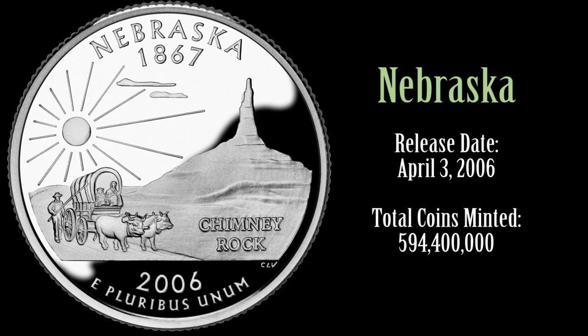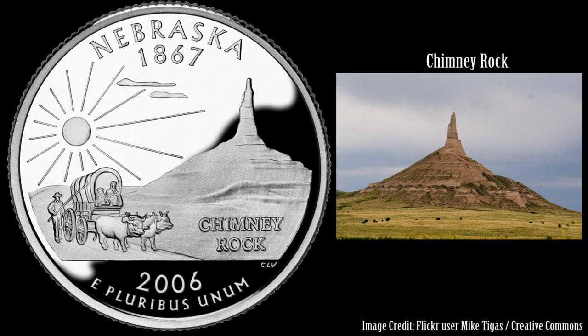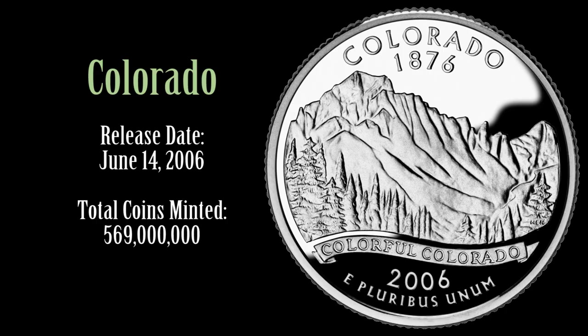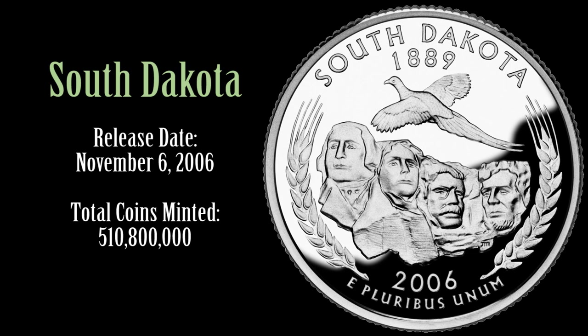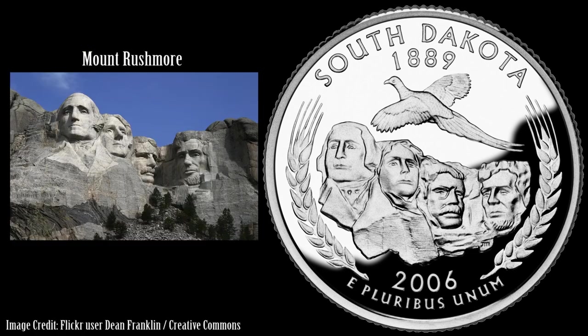Nebraska's Quarter features Chimney Rock, a famous landmark used by settlers traveling west, represented by the covered wagon. Colorado's Quarter features Long's Peak in the Rocky Mountains and the state's slogan of Colorful Colorado. North Dakota's Quarter features American bison in the Badlands of the state. South Dakota's Quarter features Mount Rushmore, a huge sculpture carved into granite in the Black Hills in 1925. It serves as a national memorial to George Washington, Thomas Jefferson, Theodore Roosevelt, and Abraham Lincoln, four of the country's most influential presidents. The state bird, a ring-necked pheasant, flies above, and wheat appears to the sides.